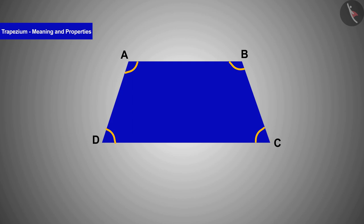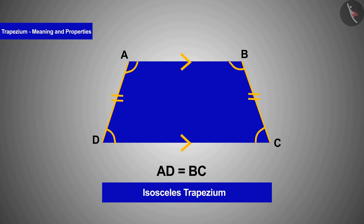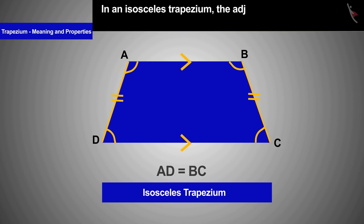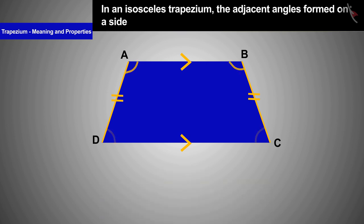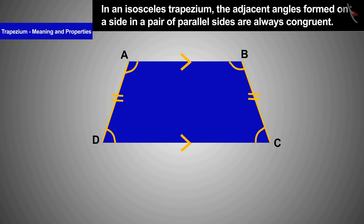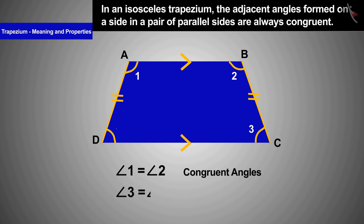Let us now know about a special kind of trapezium. If the non-parallel sides of a trapezium are of equal length, then such a trapezium is called an isosceles trapezium. A major feature of the isosceles trapezium is that the adjacent angles formed on a side in pairs of parallel sides are always congruent. Therefore, in this trapezium, angle 1 will be equal to angle 2, and angle 3 will be equal to angle 4.